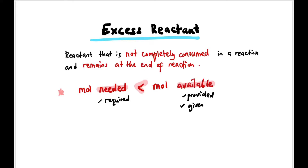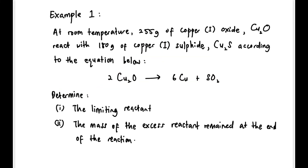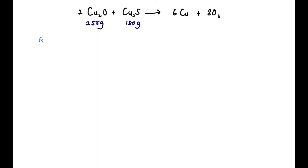Now let's do some calculation. Example 1: 255 grams of copper(I) oxide Cu₂O reacts with 180 grams of copper(I) sulfide Cu₂S according to the equation. Find the limiting reactant and the mass of excess reactant remaining. First step, as usual, we list the information given and find mole available for both reactants.